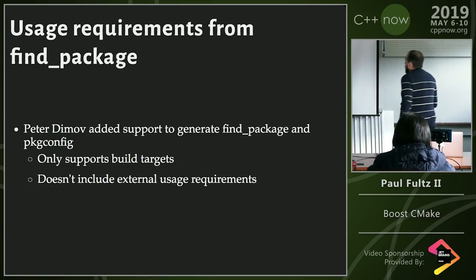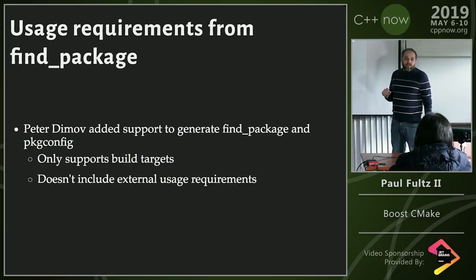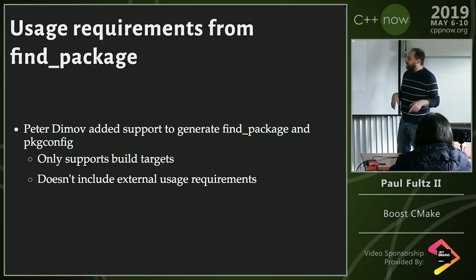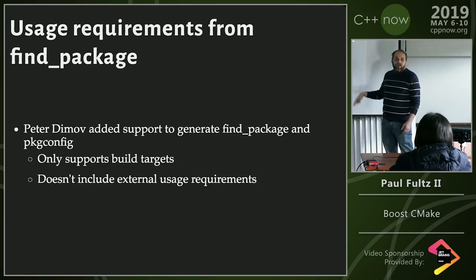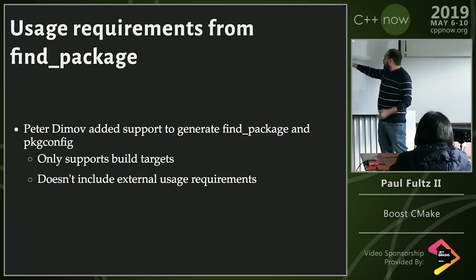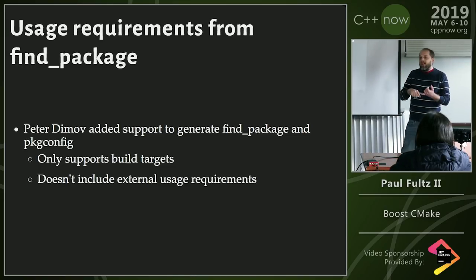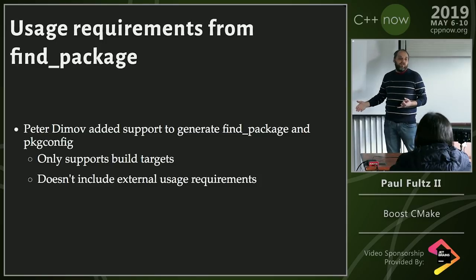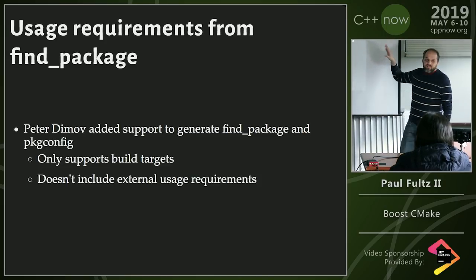The current state for usage requirements and find_package: Peter Dimov has recently added support to generate the find_package and package config from Boost.Build. It's not entirely perfect but it works with some limitations. One, it only supports build targets — if you want usage requirements for Boost.Asio you won't get a target because it's header-only. Another limitation is it doesn't include external usage requirements, like linking against zlib or bzip2 alongside Boost.IOStreams.